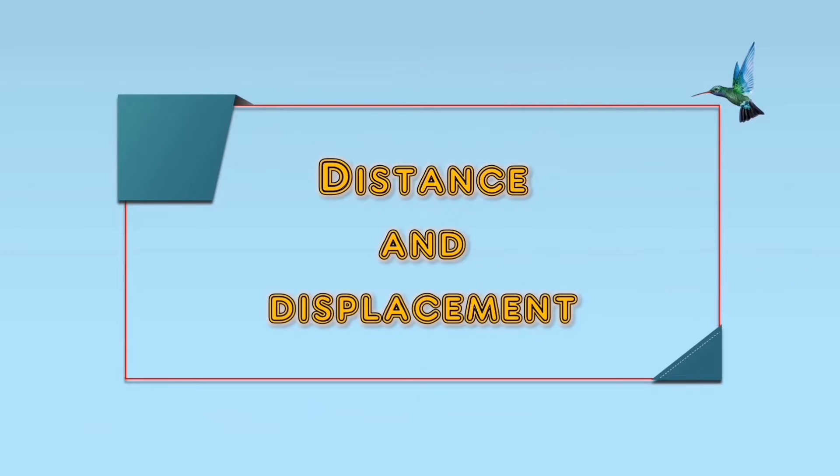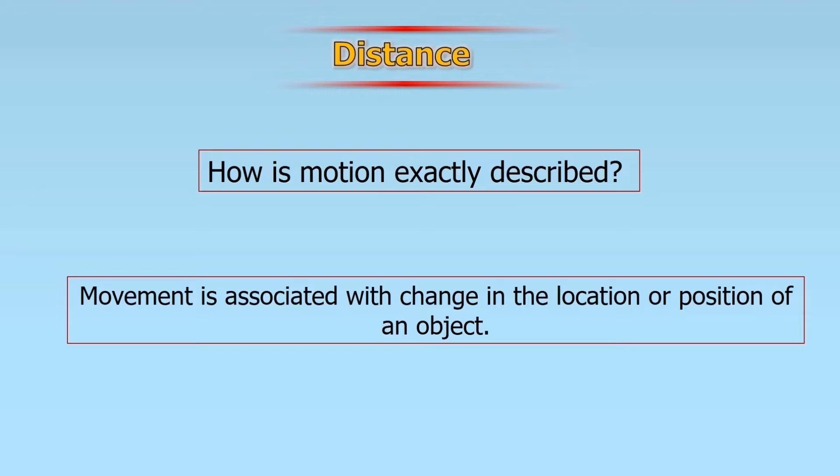How is motion exactly described? How are we going to know that an object moved? Movement is associated with change in the location or position of an object. If the location changed, the position of the object changed, then there is movement. However, if the object moved but returned to its exact location and position, then there is no movement, there is no motion.